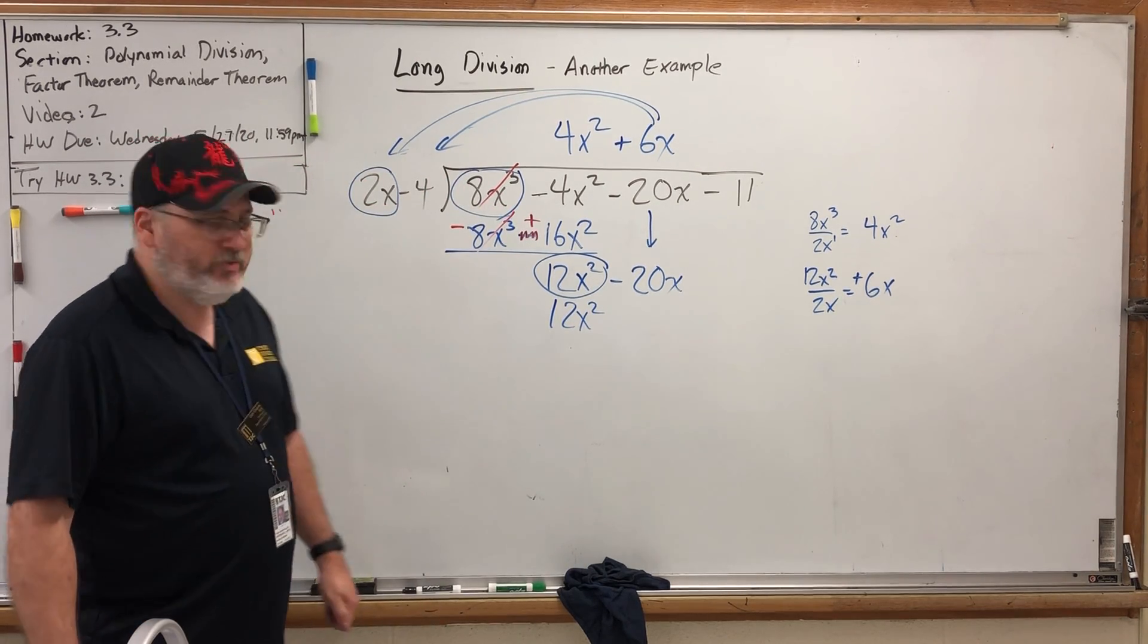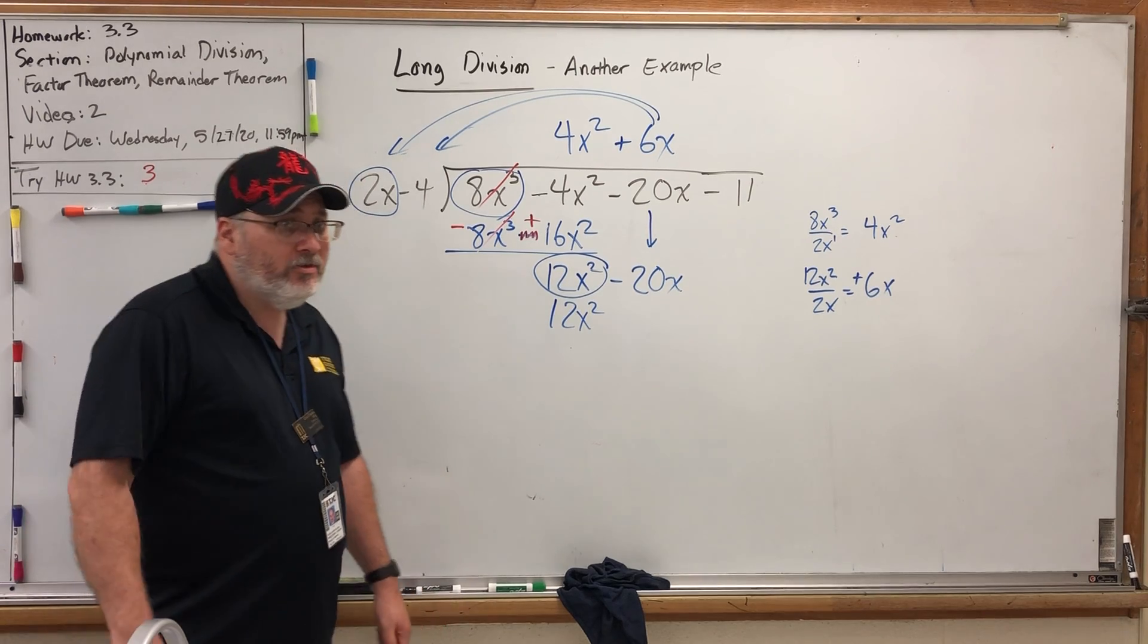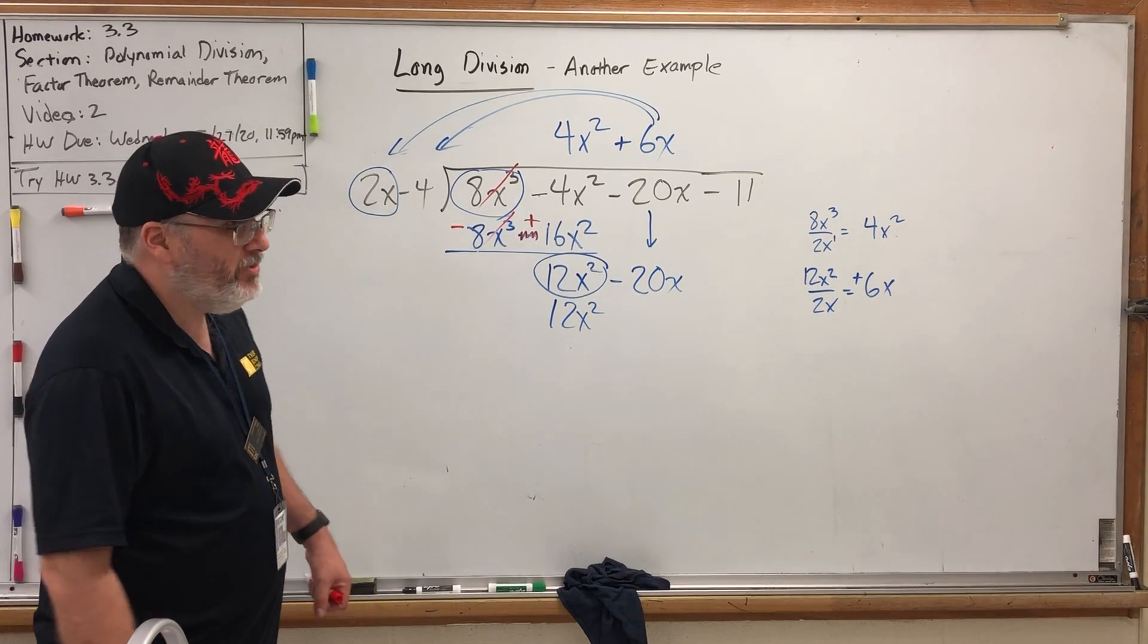Positive 6x times positive 2x is positive 12x². If you're saying, I thought they were like terms, but we're not adding. Like terms is an adding, subtracting thing.